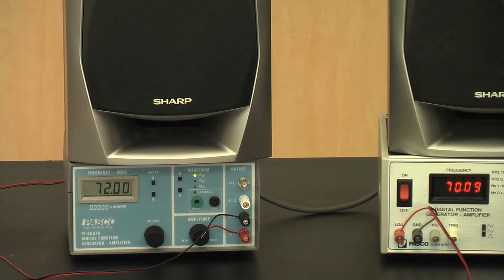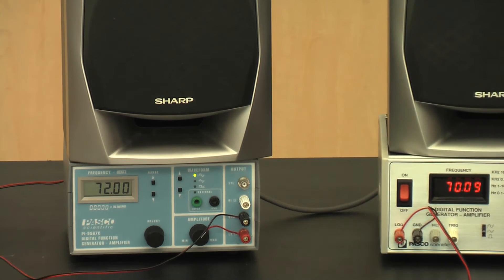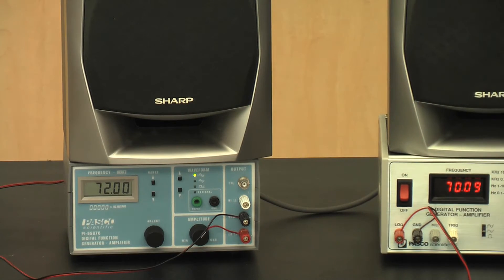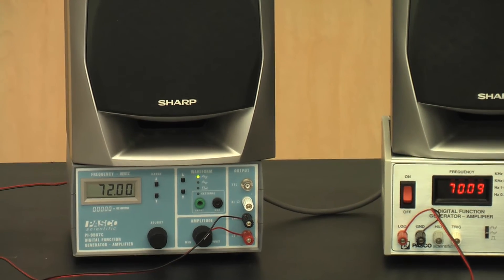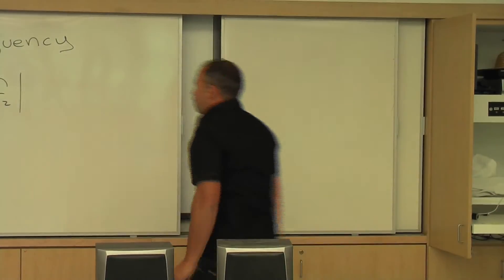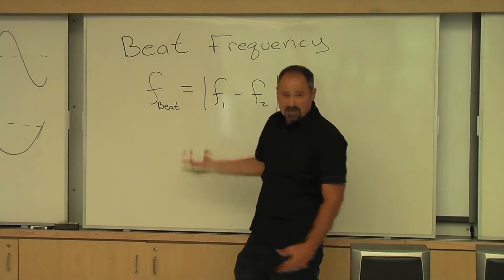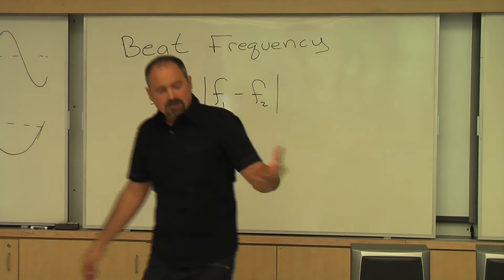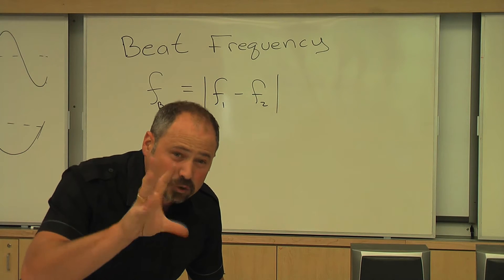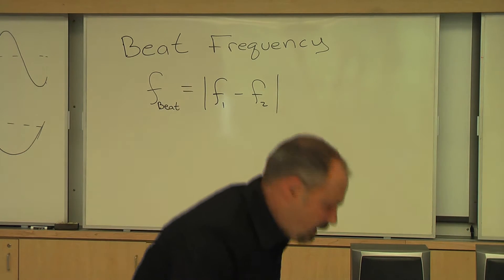I have two waves interfering with each other. A sound wave produced at 72 hertz coming out of here, and a sound wave produced at 78 hertz coming out of here, and these two waves are interfering with each other. What you're hearing now is called the beat frequency. We can find what that frequency is simply by subtracting the two frequencies and taking the absolute value. So in this case, the beat frequency is 2 hertz — that's two cycles per second — so twice a second it goes: wah, wah, wah. Seems about right.